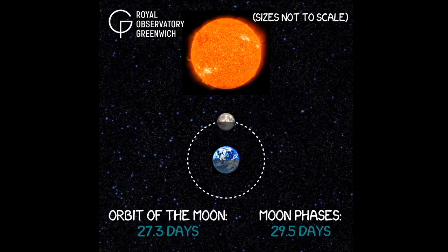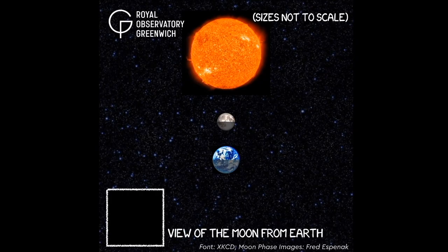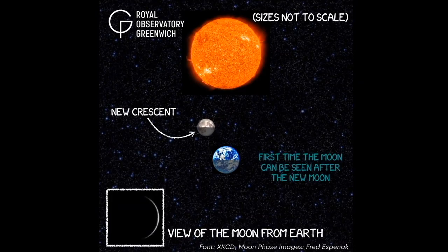For the Moon to orbit the Earth, it takes a little over 27 days. However, to go through all of the phases — from New Moon back to New Moon — that takes 29 and a half days, so nearly a calendar month. The Islamic calendar is based on Moon phases. At the beginning of the month will be the New Crescent Moon. The New Crescent is the first time the Moon is seen after the New Moon. This means that the New Moon is always towards the end of the month in the Islamic calendar, on the 27th, 28th or 29th day.